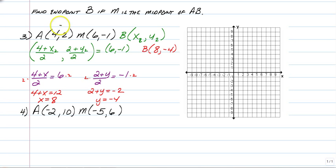So how would I get from 4 to 6? I would have to add 2. So if 6 is in the middle, then to get to B, I would just have to add 2 more. And 6 plus 2 is still going to give you 8.